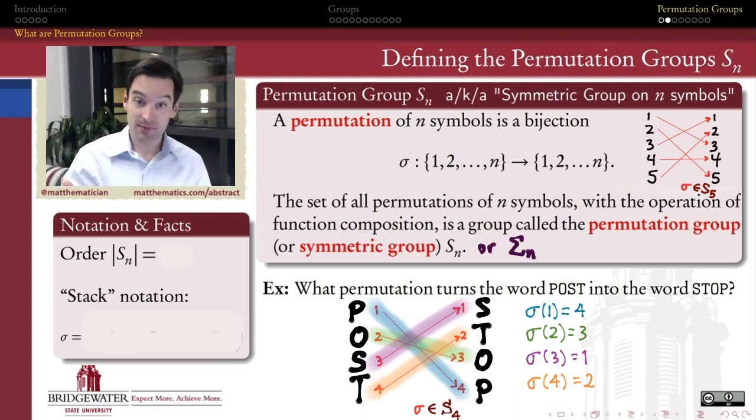You might notice that this is probably not a very scalable way of expressing permutations. If I want to talk about a permutation of 150 symbols, I don't want to list out what happens to every single one of the elements from my domain set. So there must be a more efficient way.